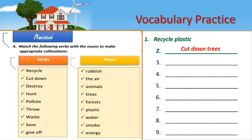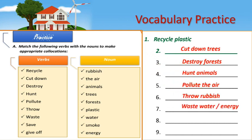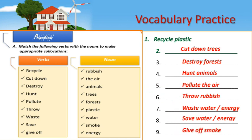Let's now have a look at the key answers to the exercise. The second collocation is 'cut down trees'. 'Destroy' is to be matched with the word 'forests' — we destroy forests. 'Paint animals', 'sell animals', 'pollute the air', 'throw rubbish', 'waste water' or 'waste energy', 'save water' or 'save energy', and finally 'give off smoke', which means send smoke into the air.